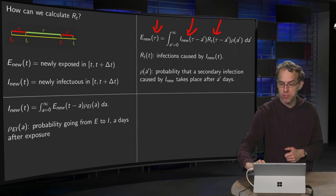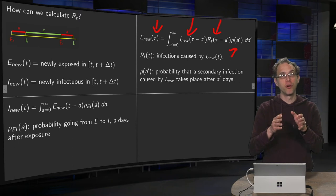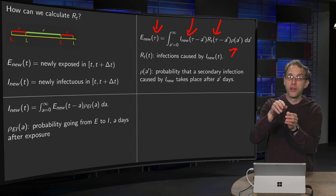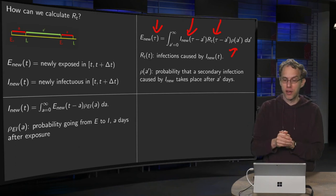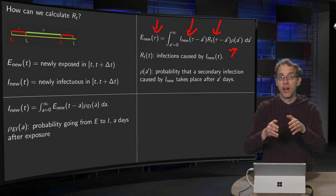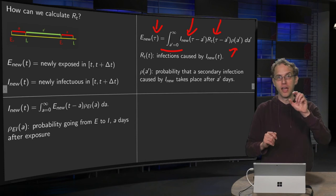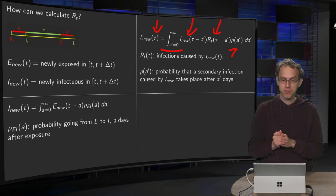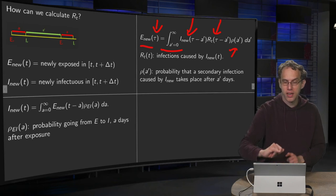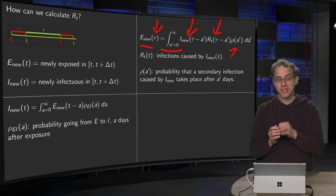And then also you have to multiply with this probability distribution, of course, times the chance that after a prime days someone gets exposed. So, and then sum everything up, of course, from a prime from zero to infinity.